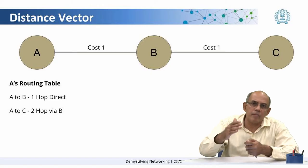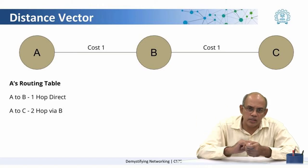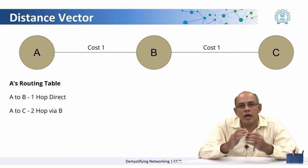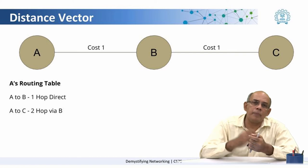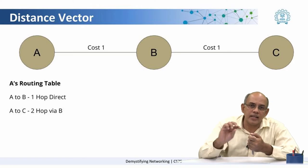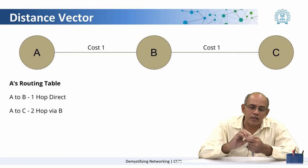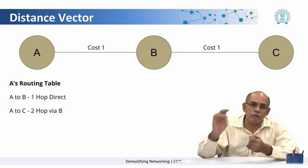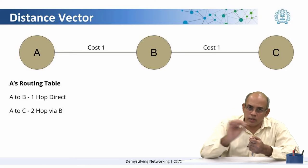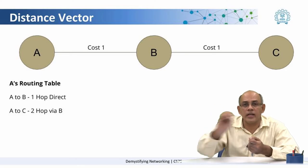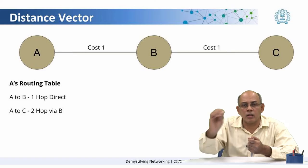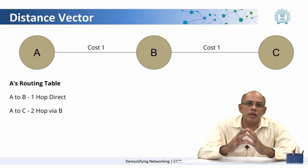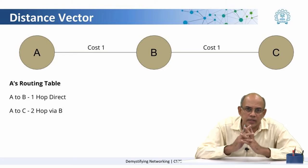For example, if A is connected to B which is connected to C, initially A knows only the route up to B. When it receives an update from B saying that B is connected to C with a cost of 1, A now knows that it can reach C with a cost of 2 — it sends the packet to B at a cost of 1, and B forwards it to C at a total cost of 2. This is the basic idea of how the routing table is constructed in a distance vector algorithm.